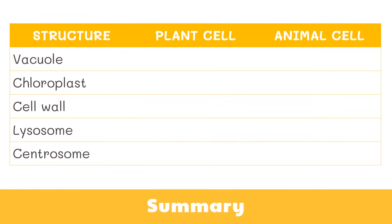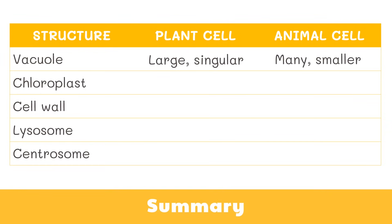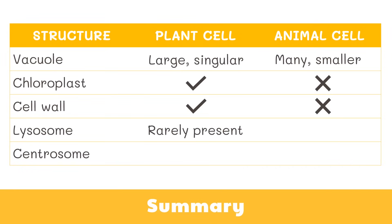Here is a table comparing the structures found in plant and animal cells. Plant cells have a large singular vacuole, while animal cells have many smaller vacuoles. Plant cells have chloroplasts and a cell wall, while animal cells don't. Lysosomes are rarely present in plant cells but are present in almost every animal cell. Lastly, animal cells have a centrosome, while plant cells do not.